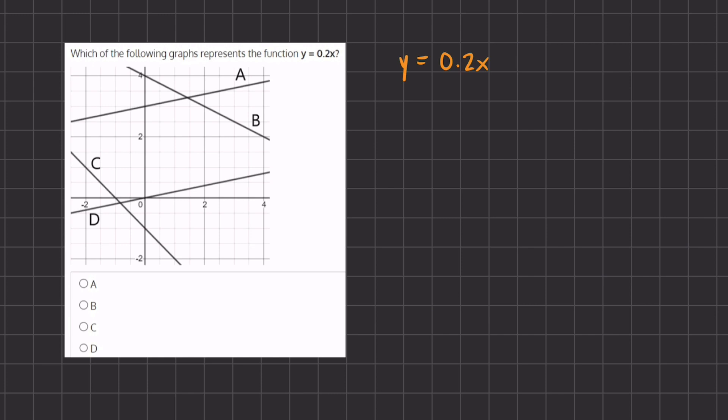If we take a look at this function, we know that a linear function has the formula y equals mx plus c. The m is the slope and the c is the y-intercept.